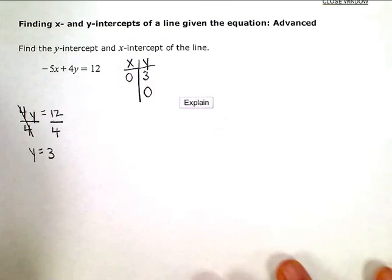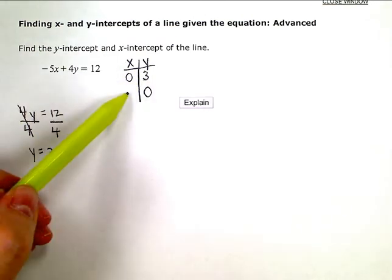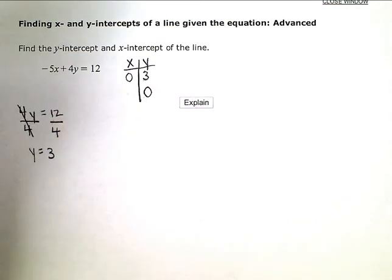So, my y-intercept is 3. To find the x-intercept, I'm going to zero out the y-term. So, if I ignore or zero out that y-term in my equation, I'm left with negative 5x equals 12.